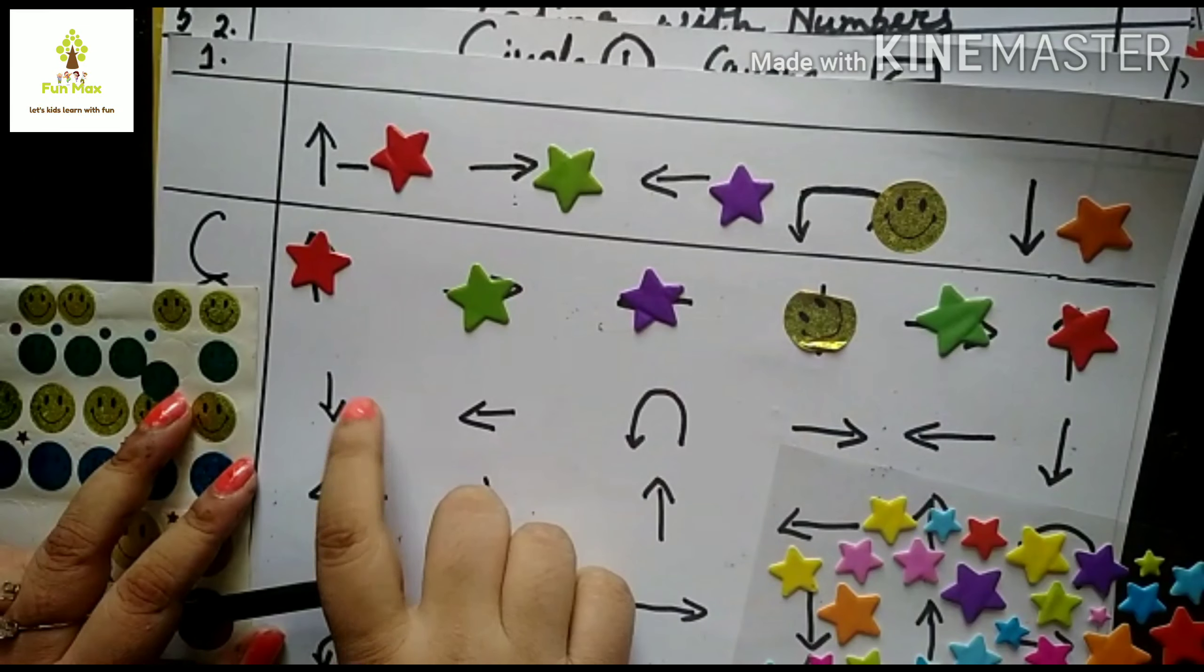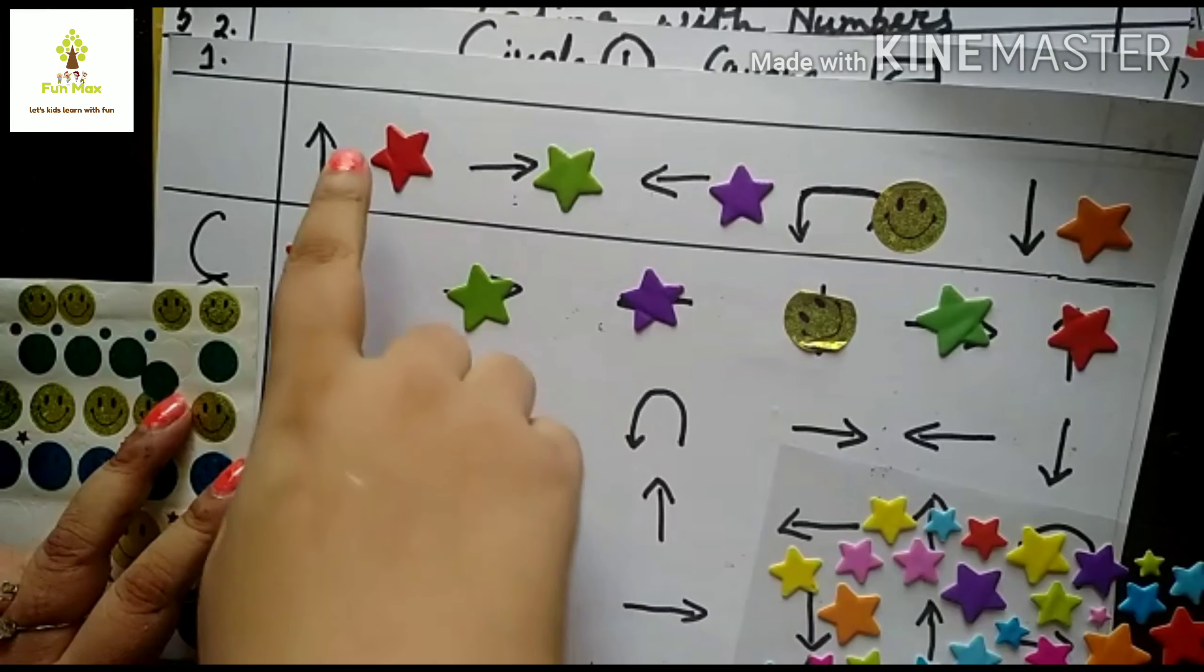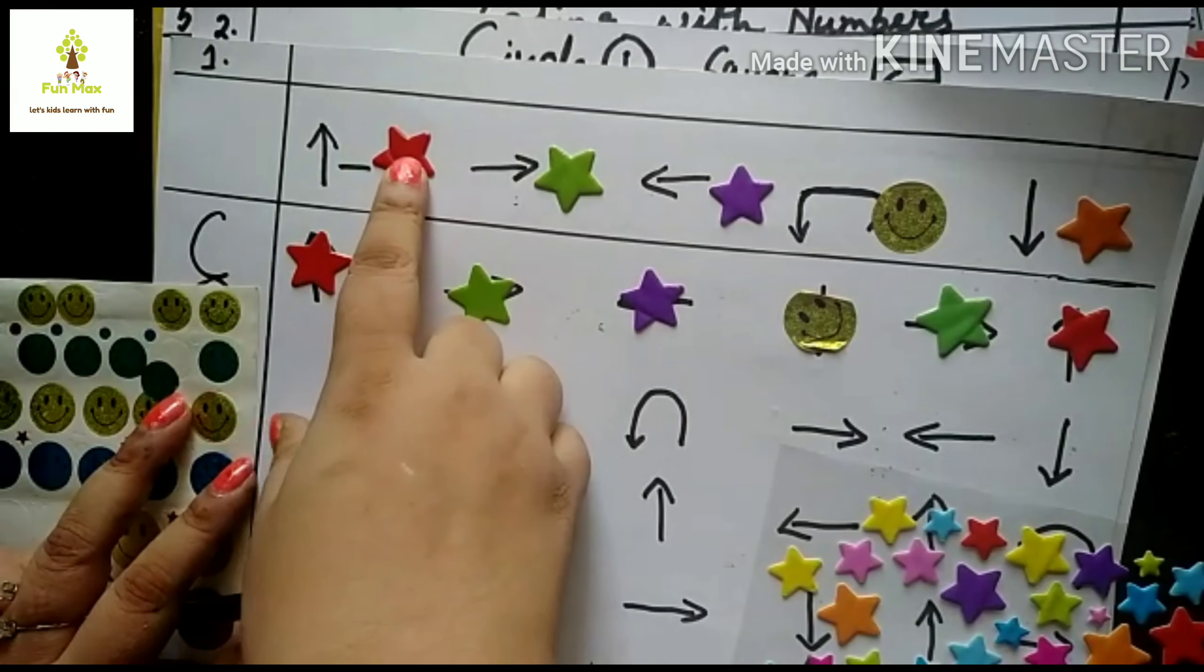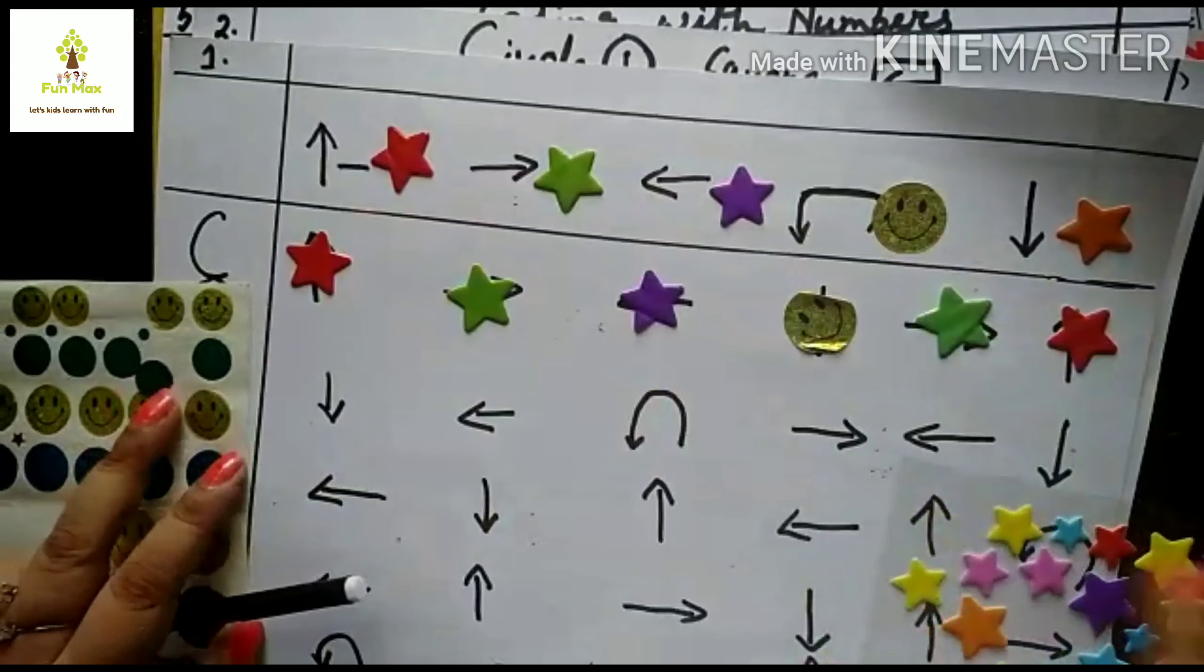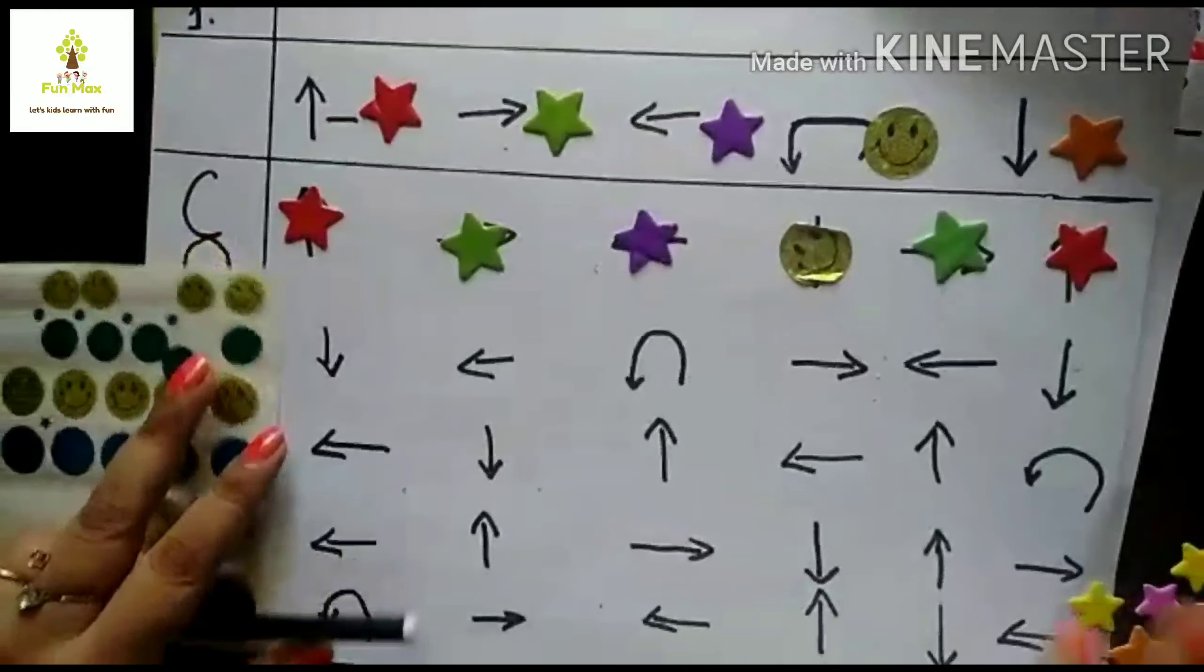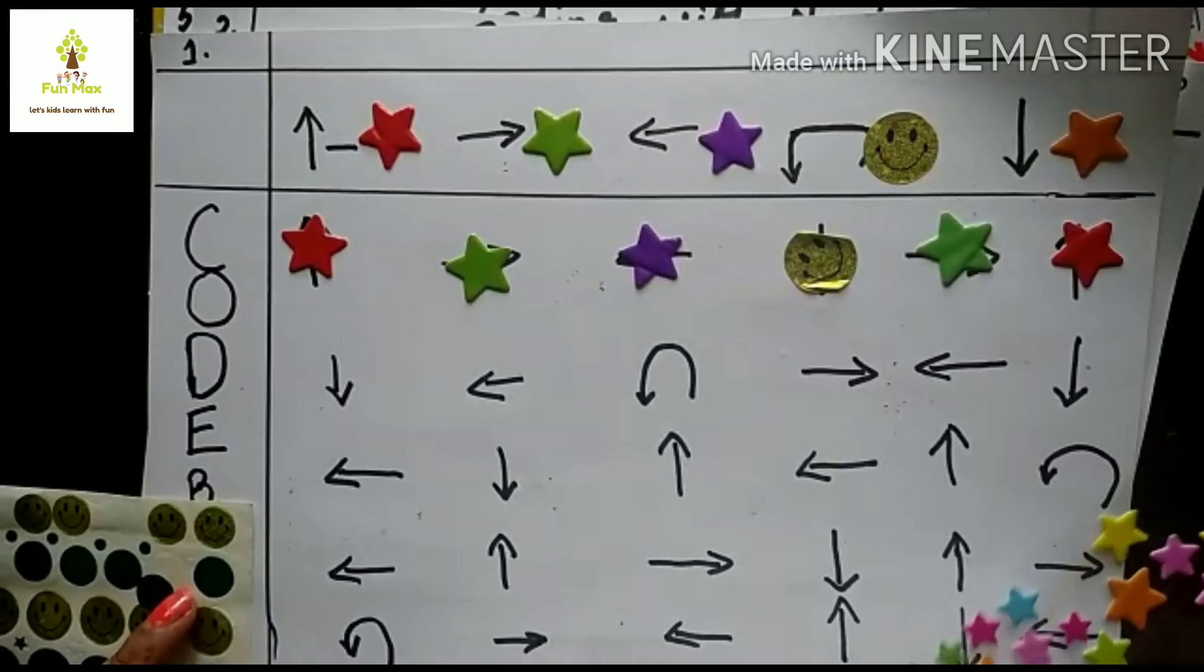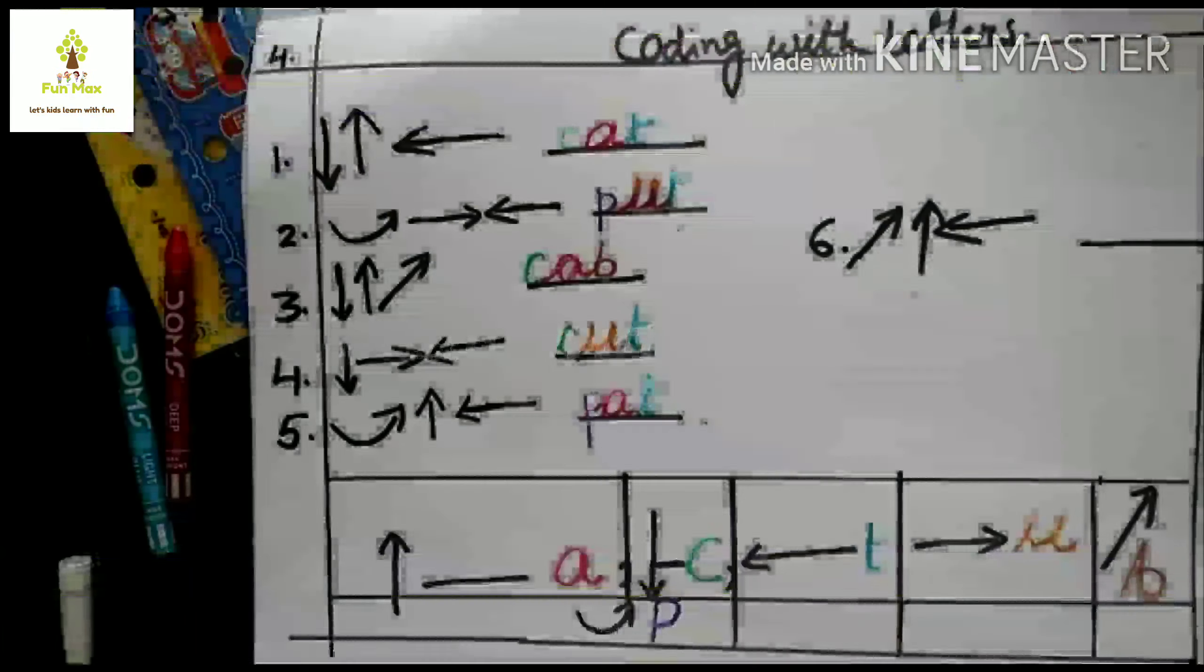And this is coding activity. Find the arrow, find the symbol, recognize the symbol, and paste the symbol here. Star, smiley. In one worksheet there are two, three items you can arrange for your kids.